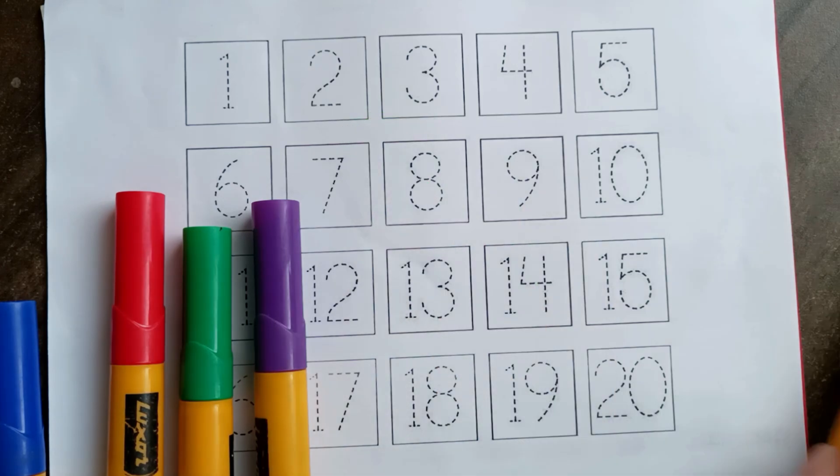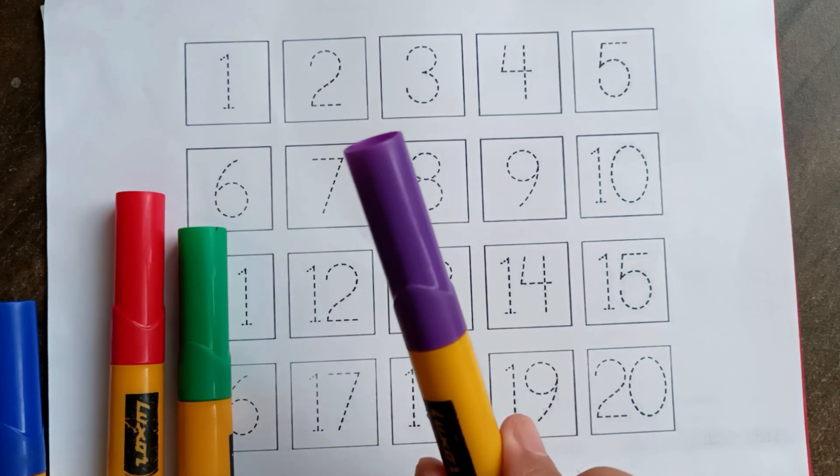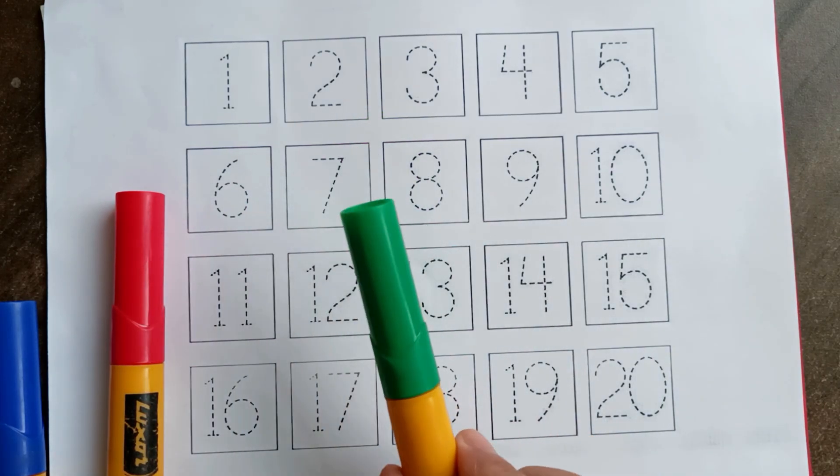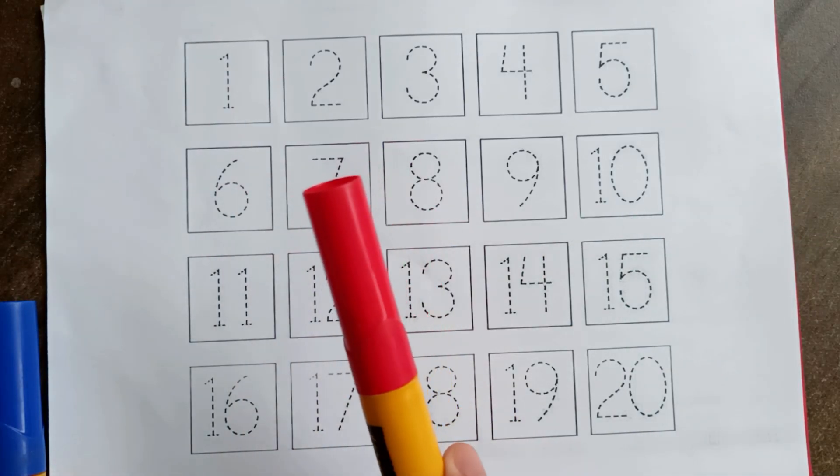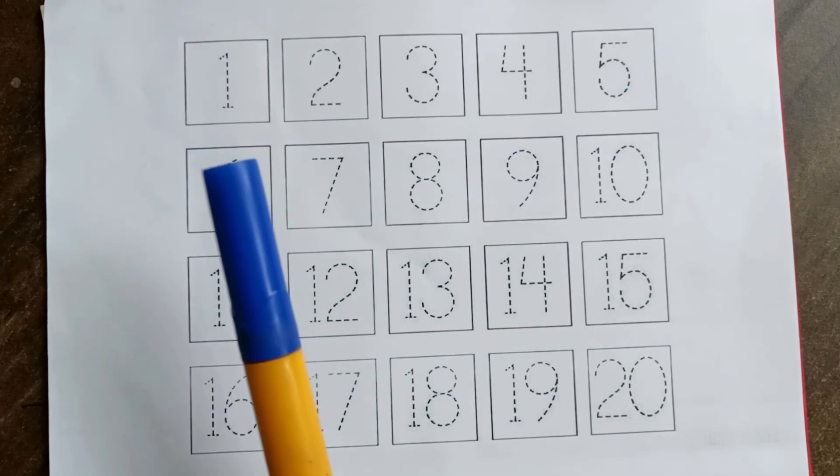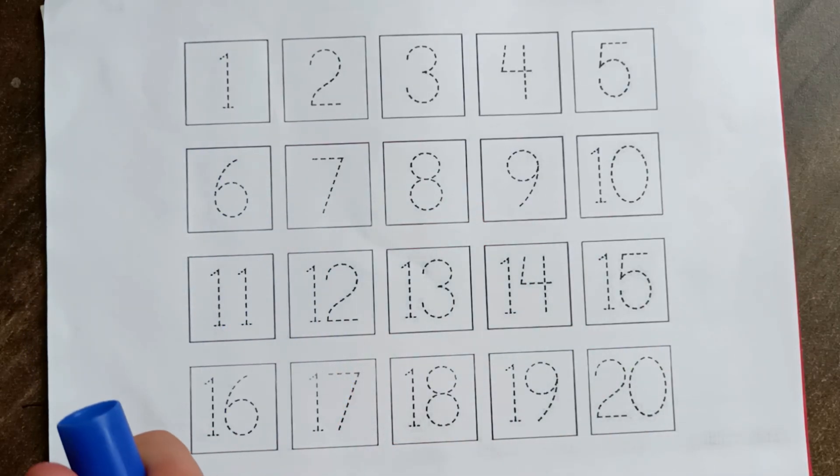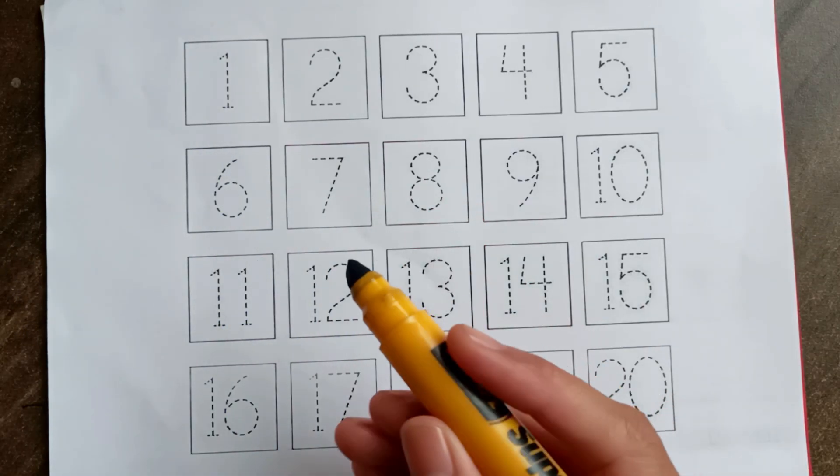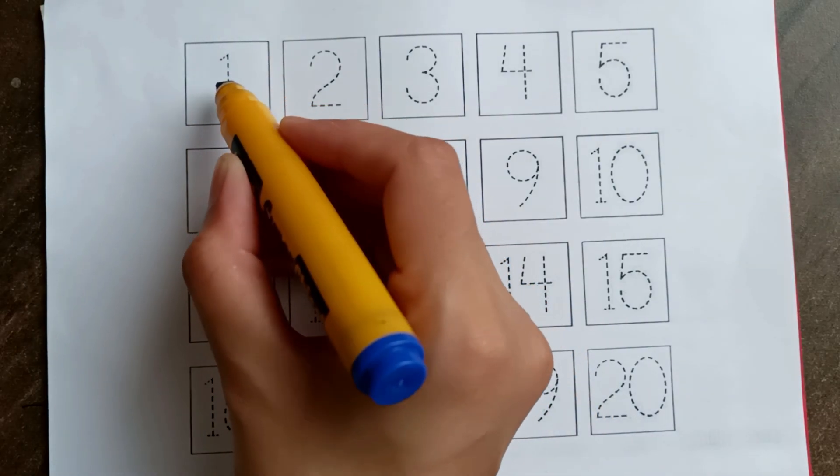Parrot color, parrot color. Purple color, purple color. Green color, green color. Red color, red color. Blue color, blue color. Let's learn number one to twenty.